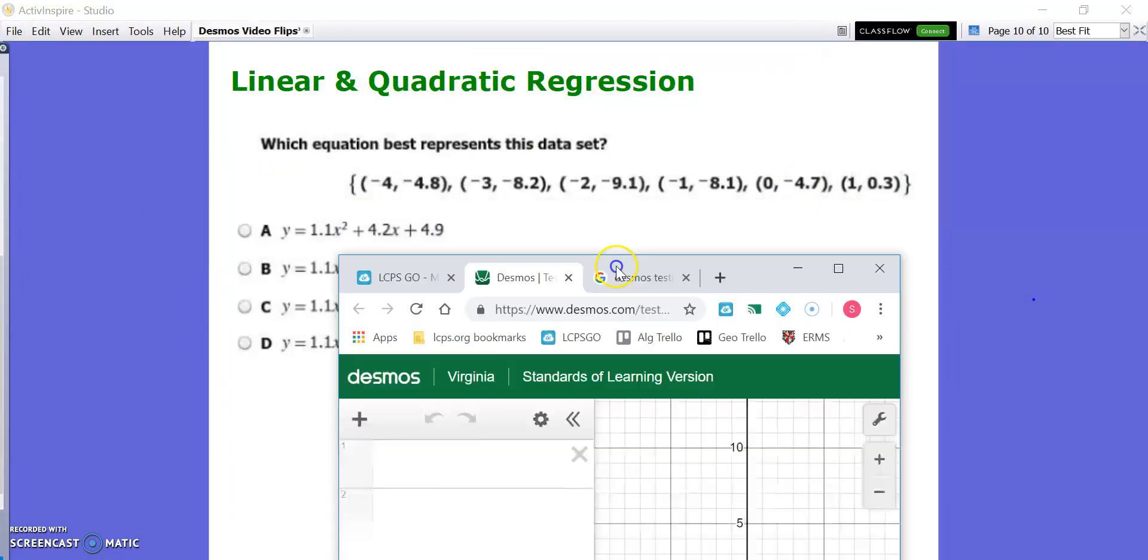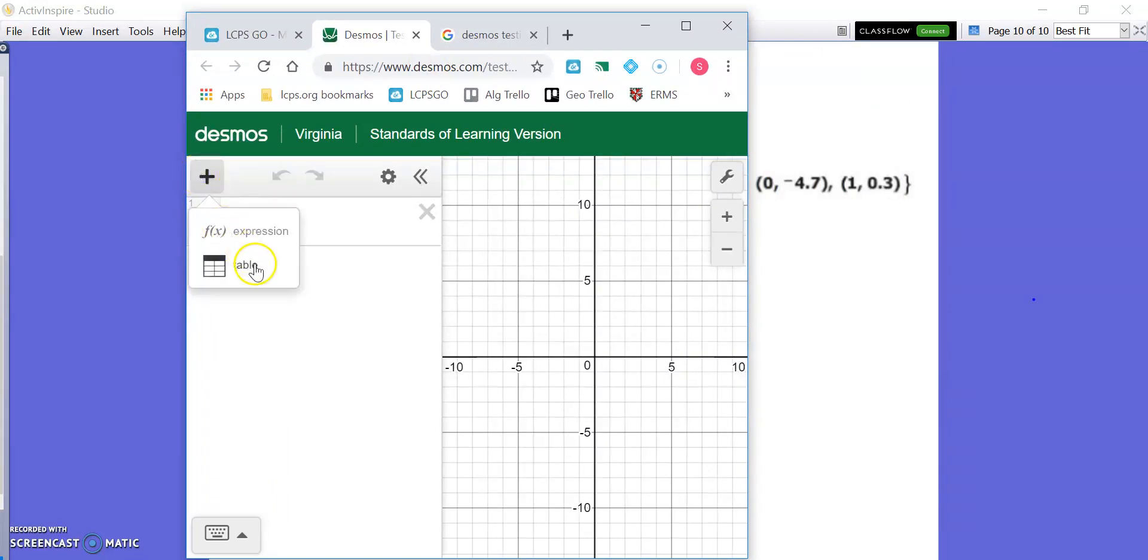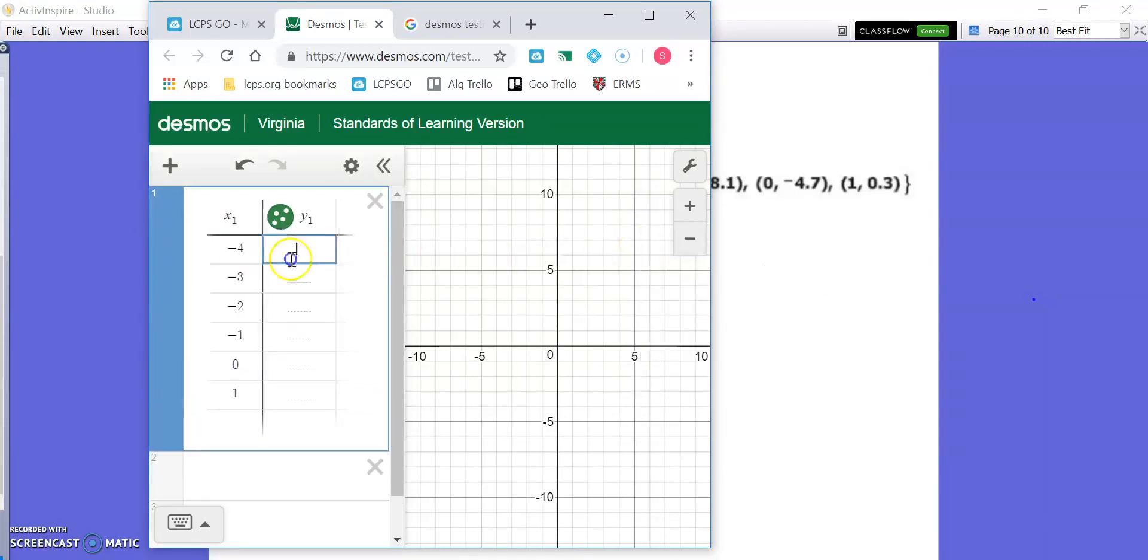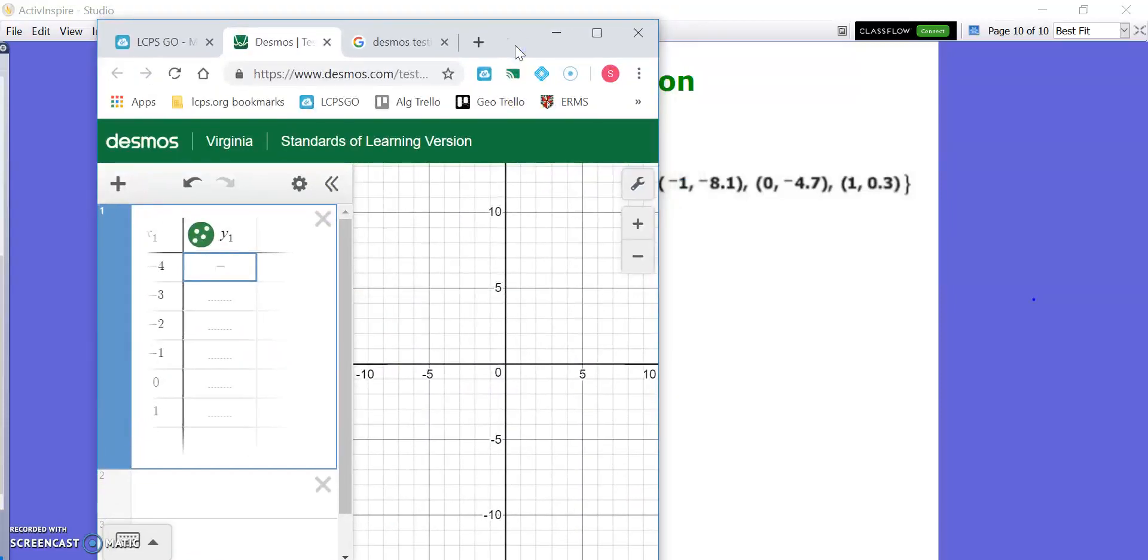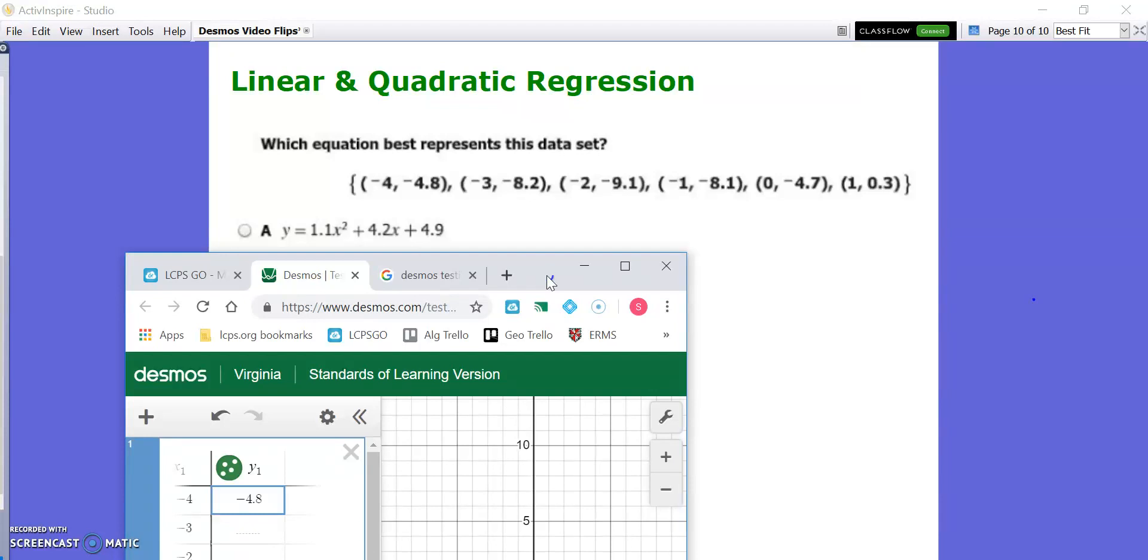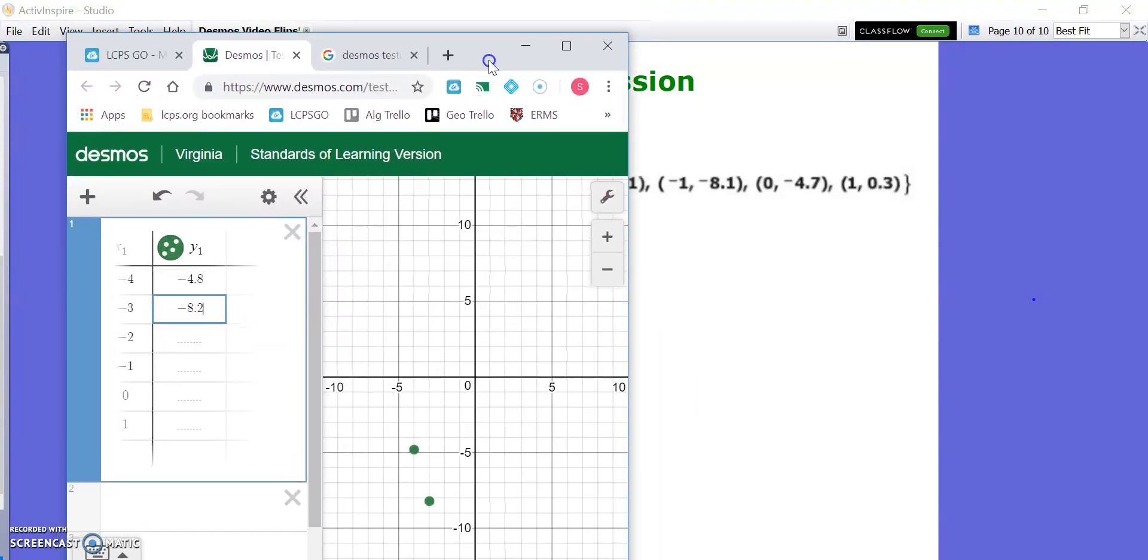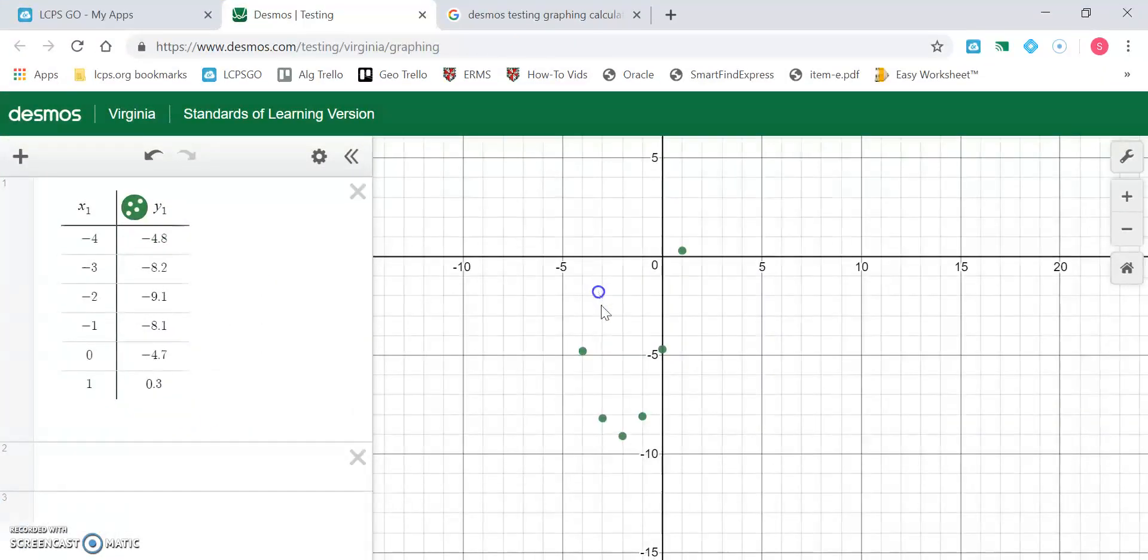Click the plus sign, add a table, and put all the X's in this column and all the Y's in this column. The X's are negative 4 through 1: negative 4, negative 3, negative 2, negative 1, 0, 1. Then for the Y's: negative 4.8, negative 8.2, negative 9.1, negative 8.1, negative 4.7, and 0.3. Hopefully I typed those all in correctly.